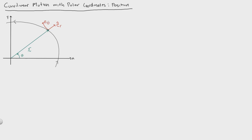We're going to call this second unit vector e theta. What this vector does is track how the particle rotates along the path. You can think of the particle rotating around some origin — this point right here — which can be defined relative to this angle theta.